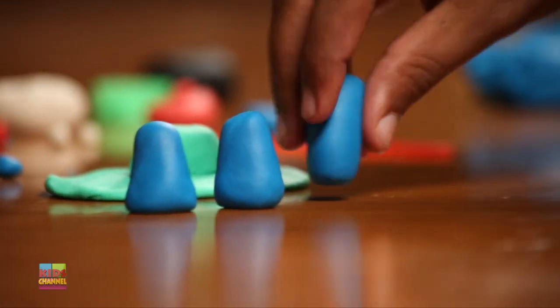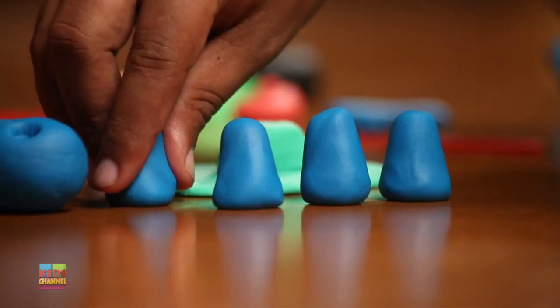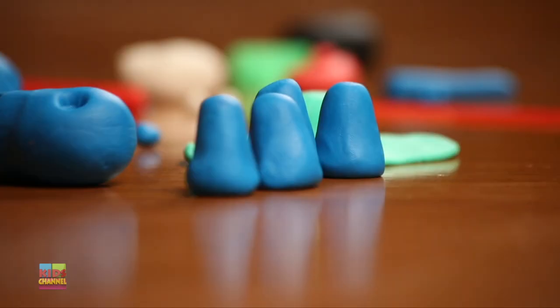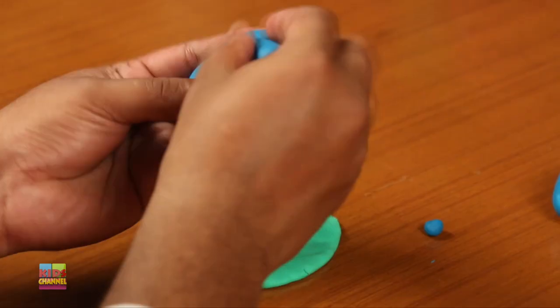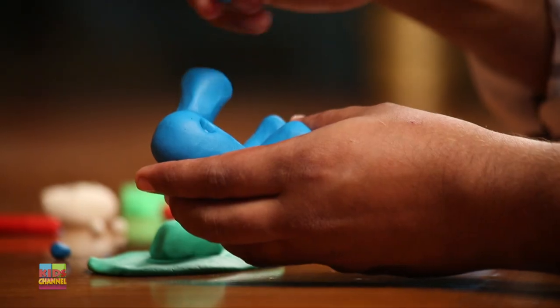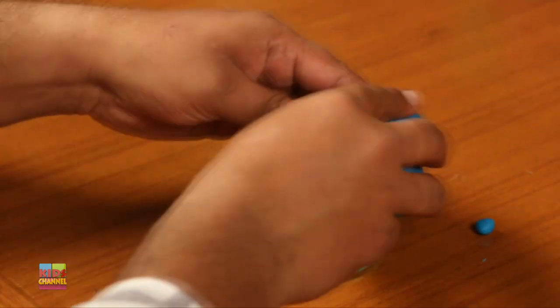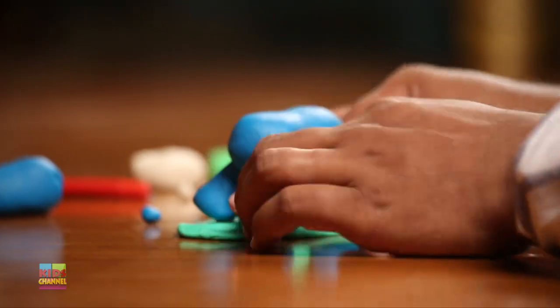So it should be a little bit wider at the bottom, a little bit more narrow at the top. Great. Now you're going to insert those four pieces inside the holes that we just made in the large blue chunk of play-doh.